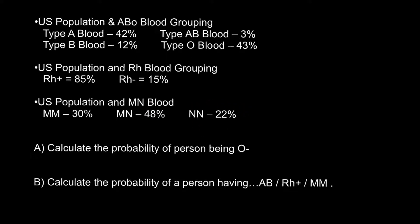About 22% of the population belong to genotype NN. Here are two questions. First, calculate the probability of a person belonging to blood group O and being RH negative. As you see, about 43% belong to blood group O — on a scale between 0 and 1, that is 0.43.